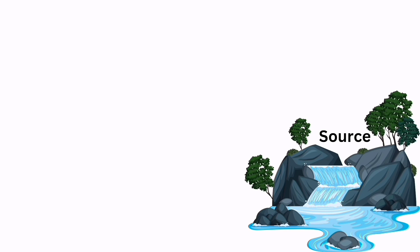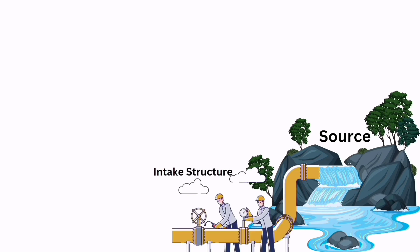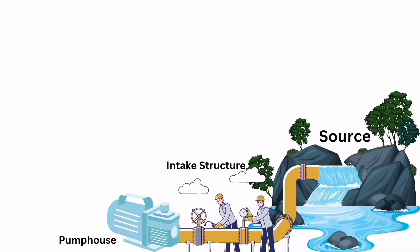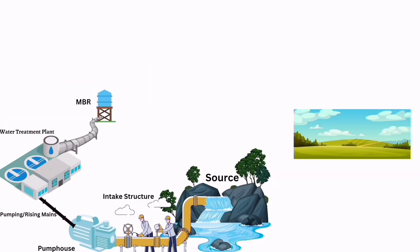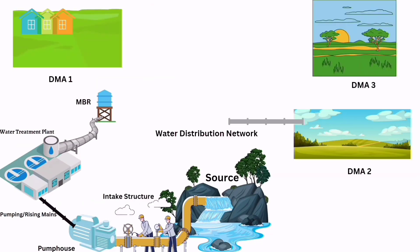In this course we will be starting from the source — how much water will be required to supply in the city — then from the source we will be taking the water to the pump house, and then from the pump house we will be taking it to a water treatment plant, from where we will distribute it to the various DMAs.